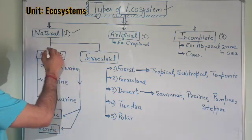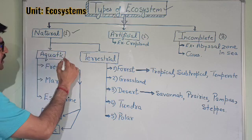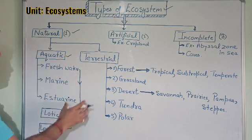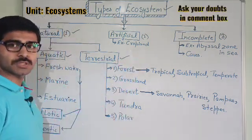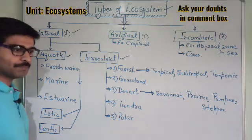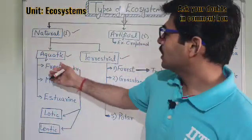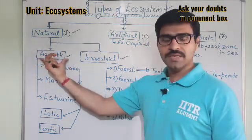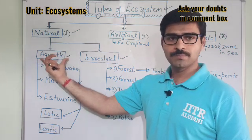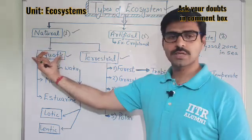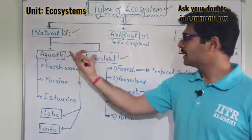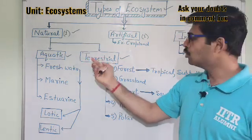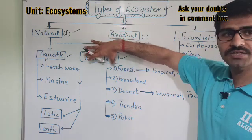Natural ecosystems can be broadly divided into two parts: first is aquatic ecosystems, and second is terrestrial ecosystems. Aquatic ecosystems are those ecosystems which are present in any water body, whereas ecosystems which are present on the land surface are known as terrestrial ecosystems.